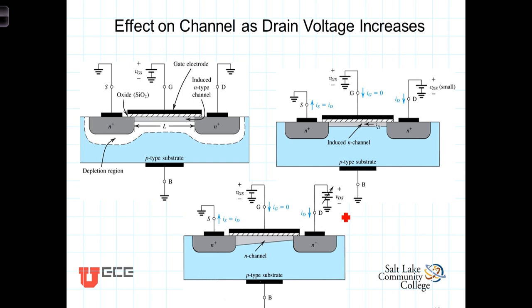As we've seen, the conductance of the channel is a function of the gate voltage VGS. So for this analysis, we'll hold the gate voltage constant at some voltage greater than the threshold voltage and observe the effect of increasing VDS.